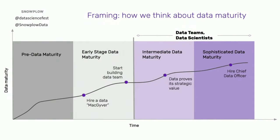The other really important concept is data maturity. We break it into four rough phases. First, pre-data maturity — before being ready for any of this. Then early-stage data maturity, where you hire your first data MacGyver: a single person who rolls their sleeves up, builds stuff, and gets initial value out of the company's data. Assuming that goes well, you start to build a dedicated data team — maybe inside engineering or the old BI function — and you start wondering how to hire your first data scientist.